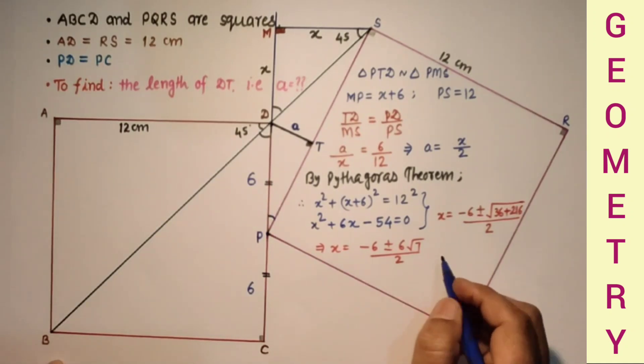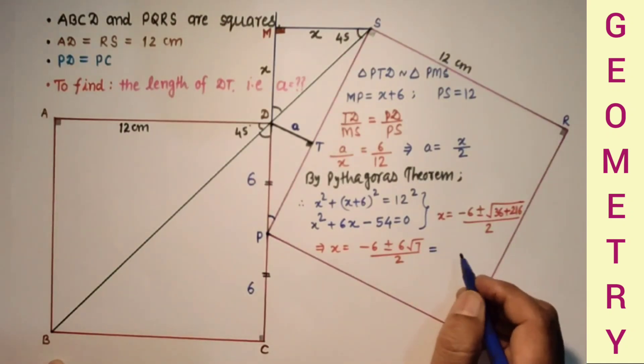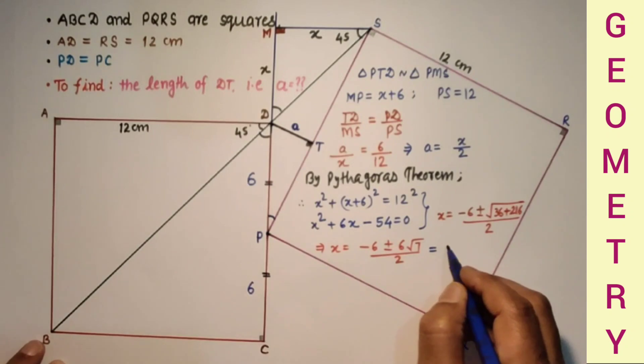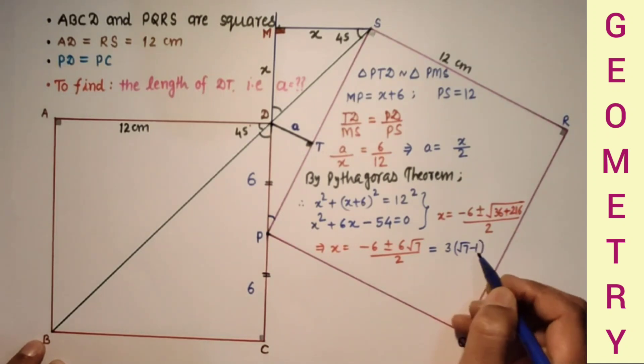There are two values, one is negative, one is positive. The negative value will be ignored. 2 is divided in both, so it will be 3 root 7 minus 3, which is 3 common, root 7 minus 1. This is the value of X.